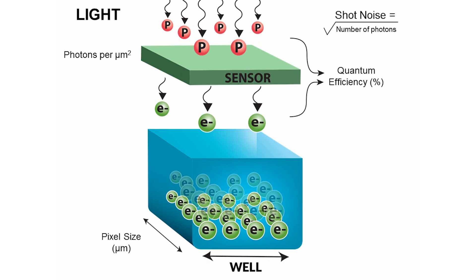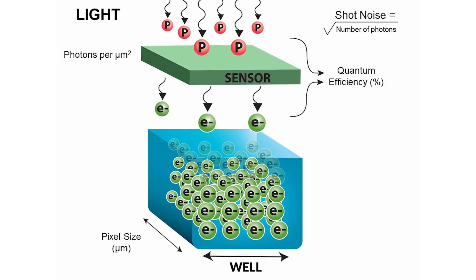We start filling up our well, and as we fill it up, at some point it gets full. That is called saturation capacity, and it's measured in electrons.